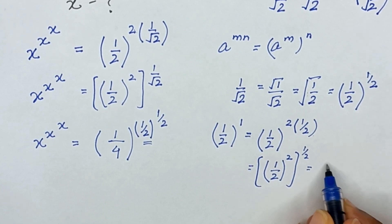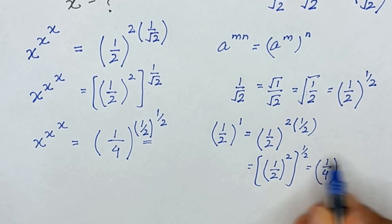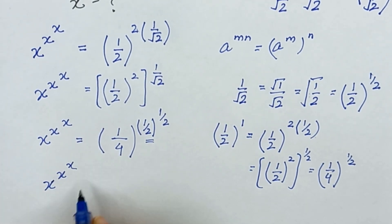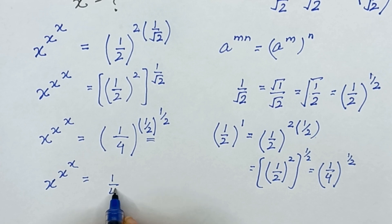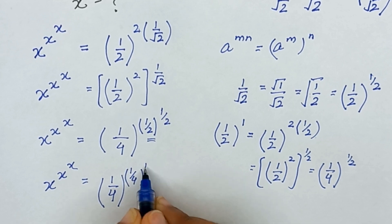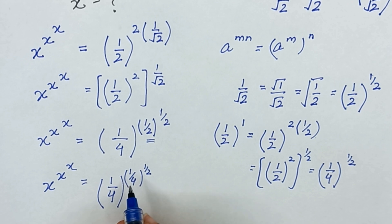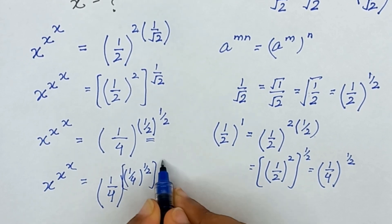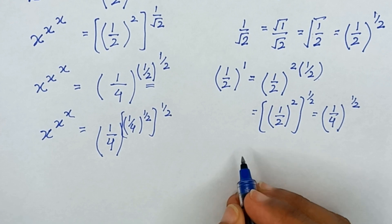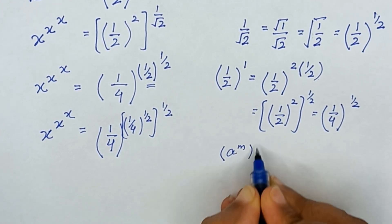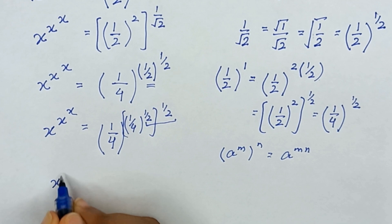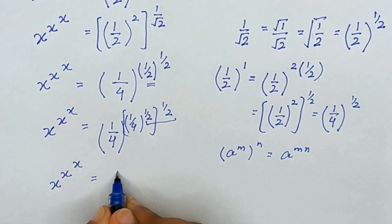So it will become: x raised to the power x raised to the power x is equal to 1 divided by 4 raised to the power 1 divided by 2. This further becomes: x raised to the power x raised to the power x raised to the power x is equal to 1 divided by 4.